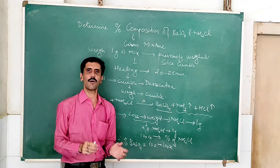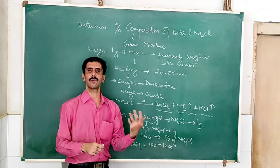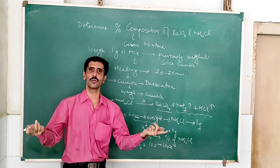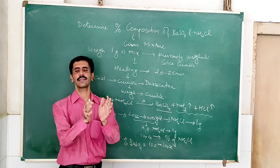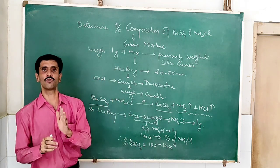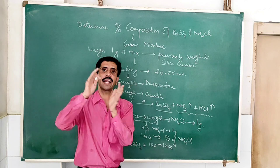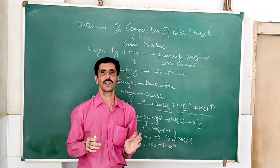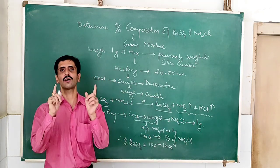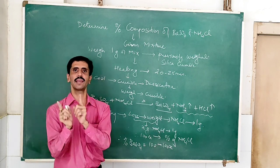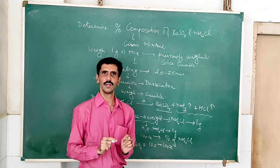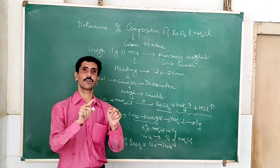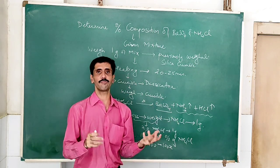So I give you a recap of how exactly this experiment has to be performed theoretically, and then the demonstration will be given. We are going to determine the percentage composition individually of barium sulfate and ammonium chloride present in the mixture. First of all, we take one gram of the mixture containing BaSO₄ as well as NH₄Cl in a previously weighed silica crucible, and then heat that crucible for around 25 minutes.